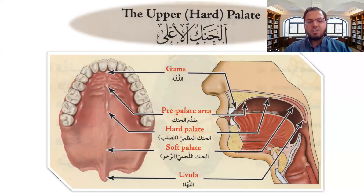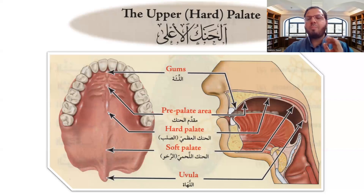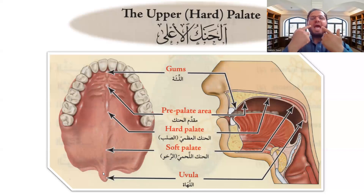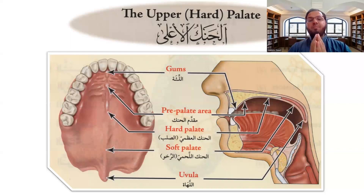Or muqaddam al-hanak. And until here, all of this part is called hard palate. Hard means it is hard inside. And the soft one — there is something inside to make it soft — that is called soft palate. And also the uvula here, which you can see if you open your mouth wide. All of these are parts of the upper palate.